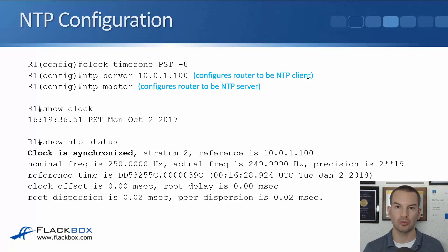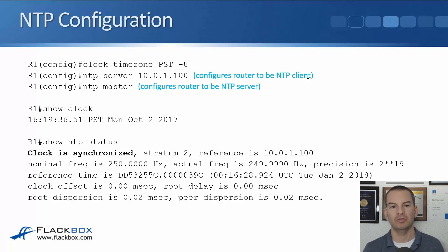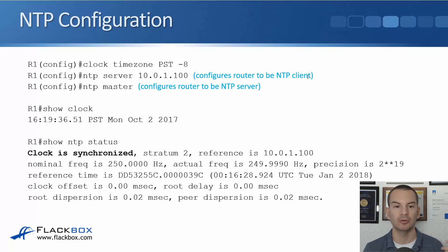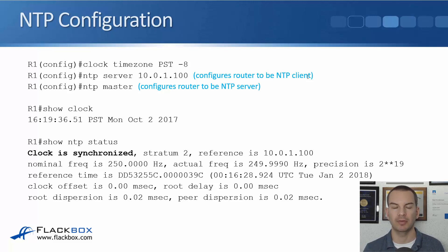Once that's done, we can do a 'show clock' to check it is showing the correct time. Also to verify, we can do a 'show ntp status' and we want to see that the clock is synchronized. Something to note for real-world environments: when you configure the NTP server, the router does not immediately change its time, because that could cause some issues with internal processes — it will do it slowly over time. It's called drifting towards the NTP server, and it can take up to around five minutes before it's showing the correct time. So don't check the clock immediately — go make yourself a cup of coffee, come back and check the clock then, and you should see the correct time. That was our global security best practices — in the next lecture, we'll configure it in the lab.